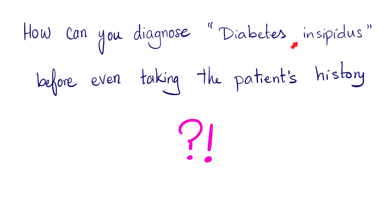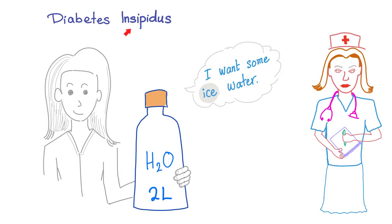Can you diagnose diabetes insipidus before even taking a patient's history? Yes — you can reach a provisional diagnosis based on the fact that patients with diabetes insipidus are always carrying the biggest bottles of water you will ever see in your life, and they are always asking for more water, especially iced water.